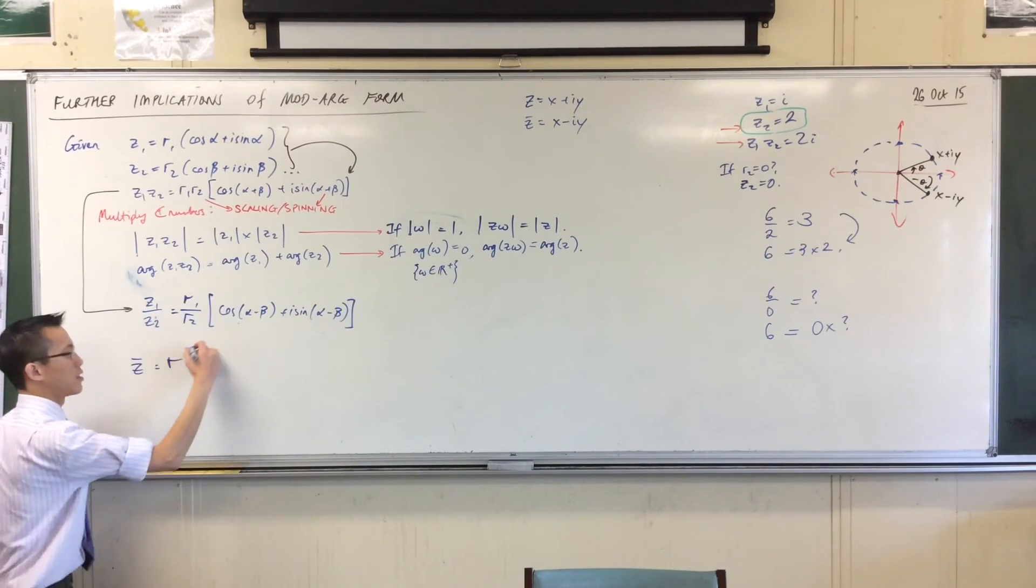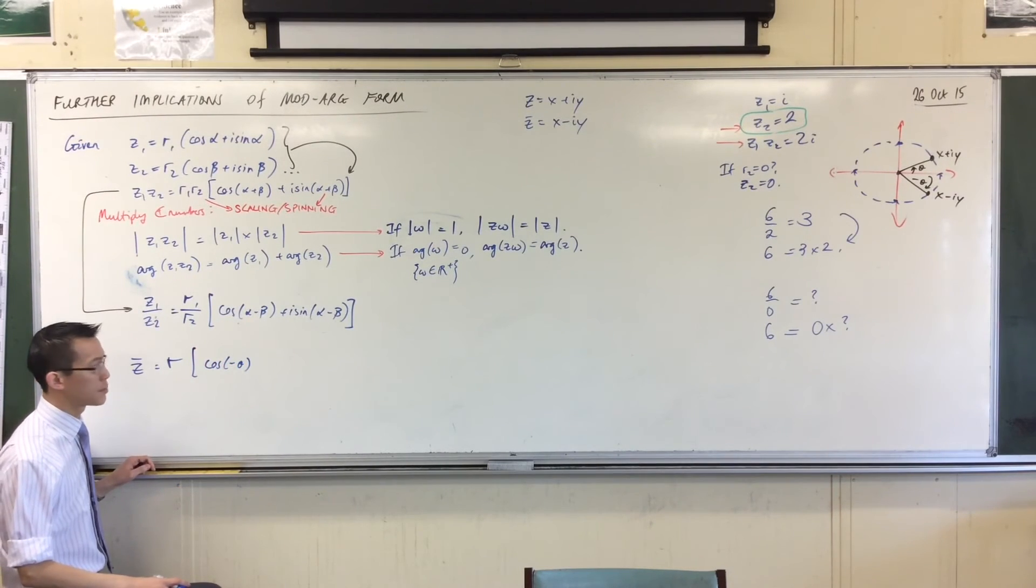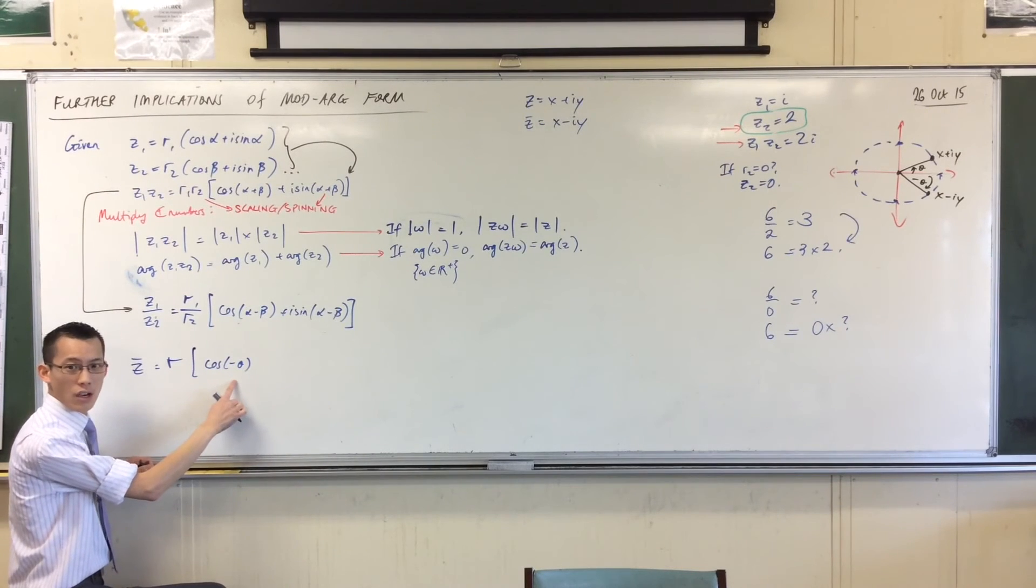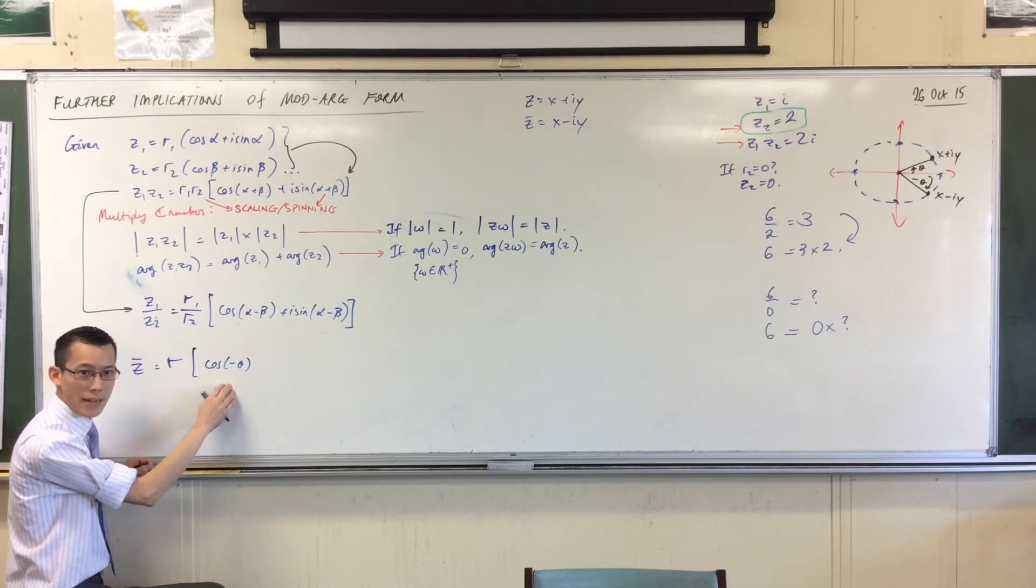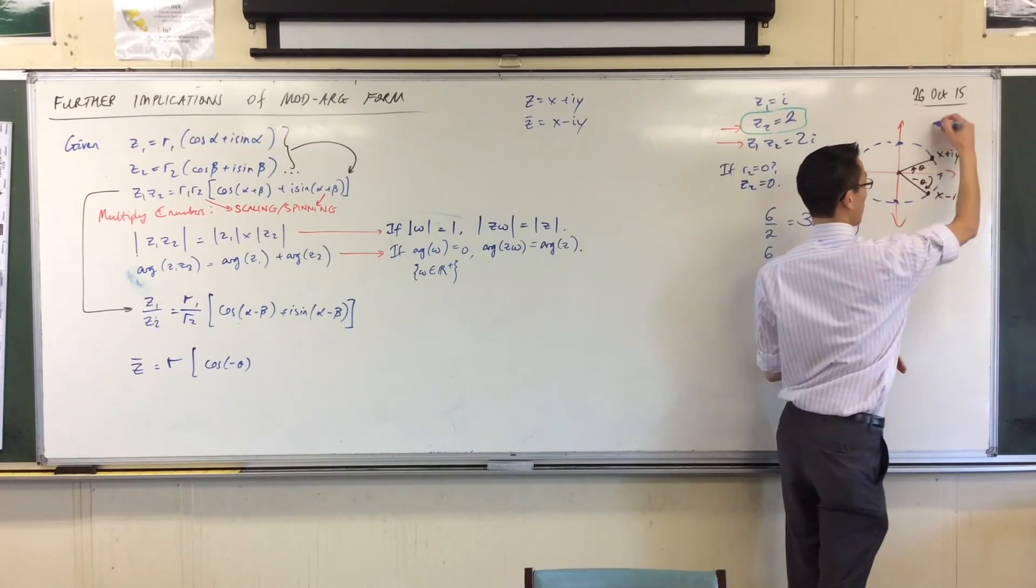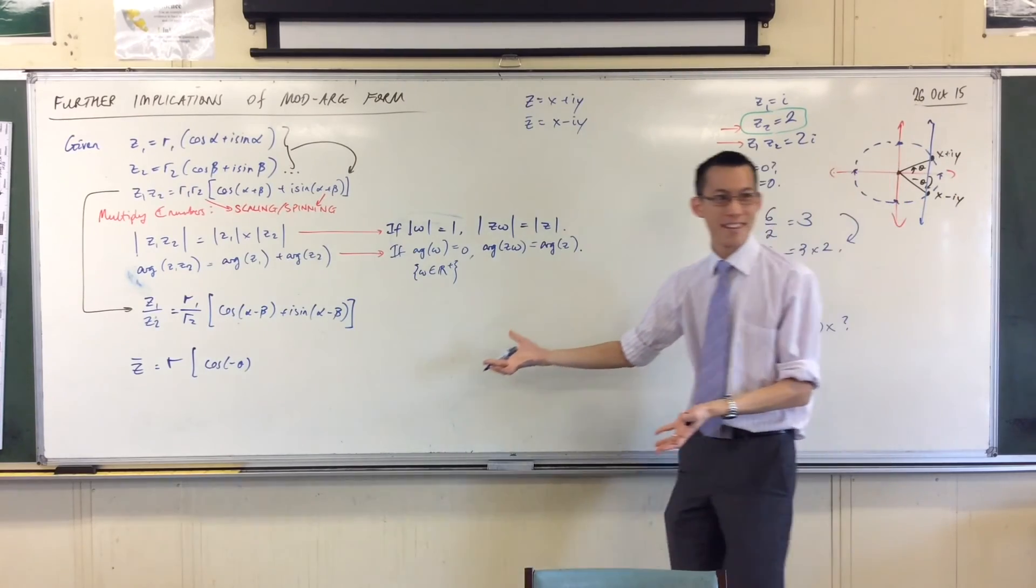So, what you've got here is going to be cos of negative theta. There's my real part. Okay? Now, it's worth noticing. Hold on a second. We just said that the real part doesn't change. Right? Like, look. The real part's still the same. Vertically. So, why have I changed my theta on that?